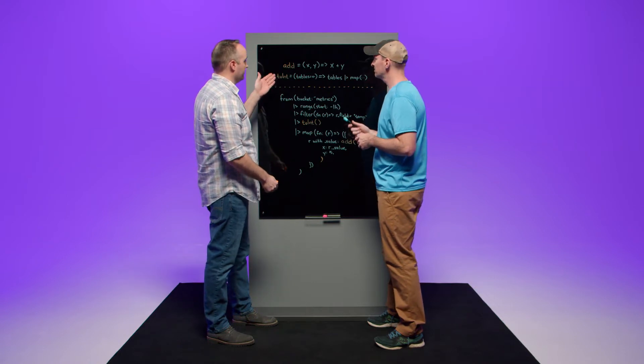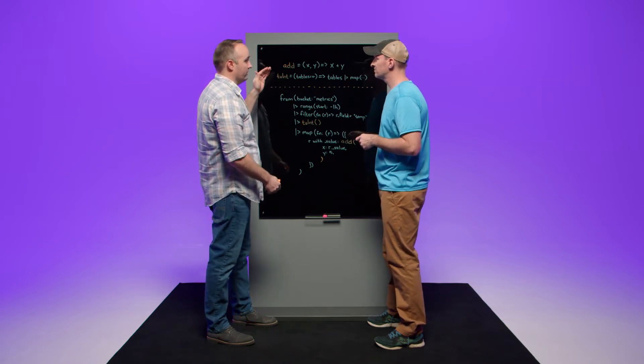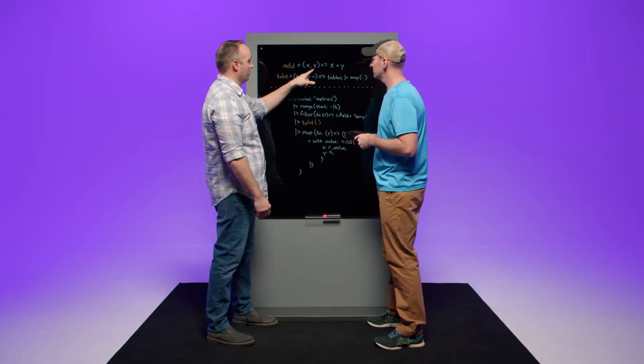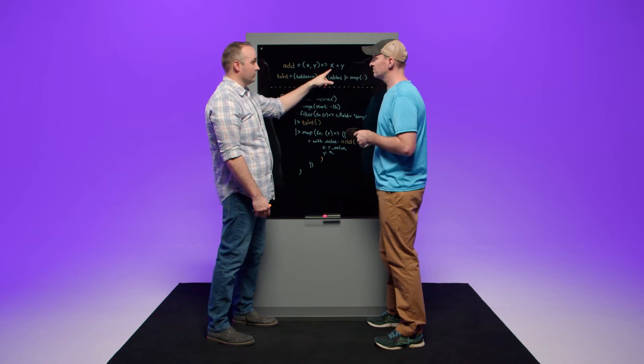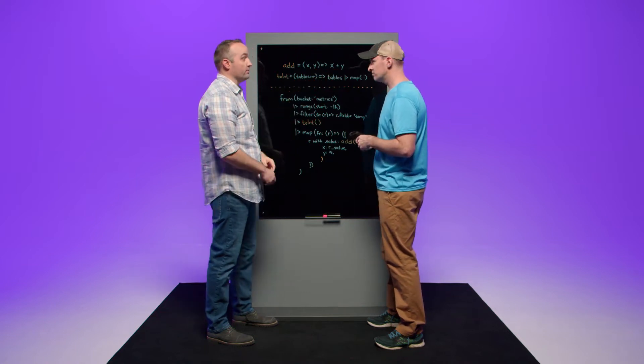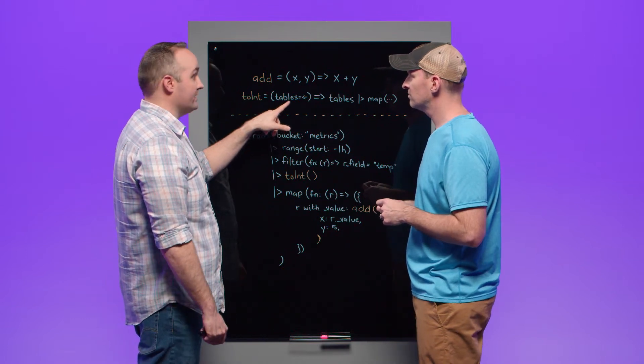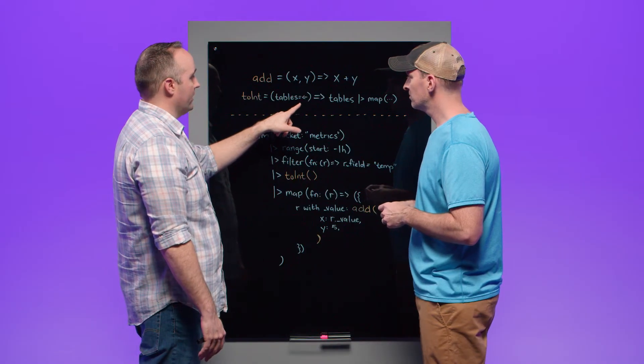So here on the board, we see the Flux syntax for functions or for defining a function. We have an add function that has an X and Y parameter and then the operation that adds those two parameters together and returns the sum of those values. We also have a toint function that has a single parameter with a default value. Whenever you define a function with a default value, if you call that function, you don't necessarily have to specify that parameter with the default value. In this case, the default value is the pipe receive operator.